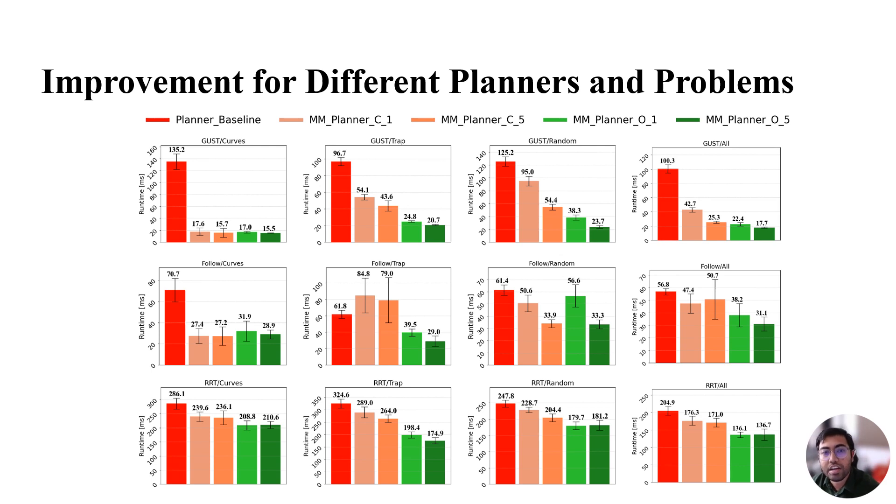The results show that motion memory can significantly reduce re-planning time compared to all three default baseline planners with the only exception of using motion memory in a closed box manner with FMT in the trap environment. In most cases, using the top five motion memory predictions outperforms using the top one prediction.